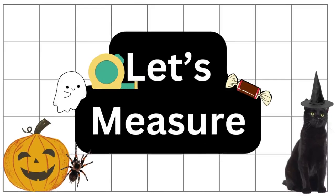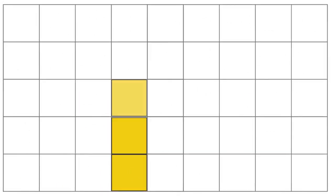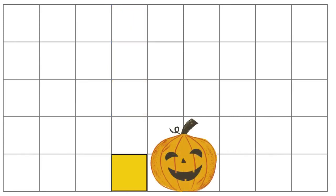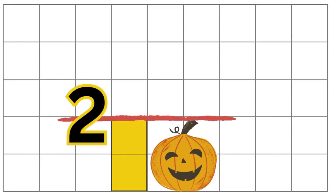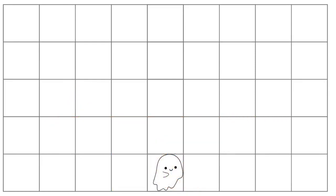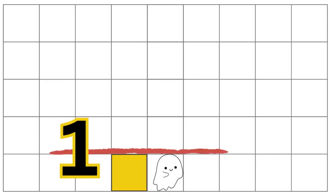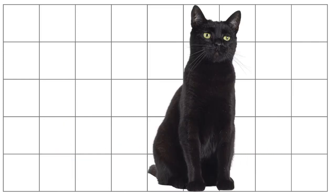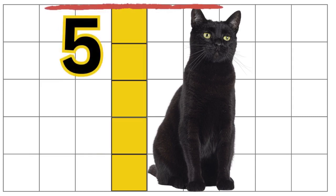Great job! Now we are going to measure the size of our objects. Count up to measure each object. I will show you first. 1, 2, 3, 4, 5. How many units is the pumpkin? 1, 2. How many units is the ghost? 1. How many units is the cat? 1, 2, 3, 4, 5. 5 units tall.